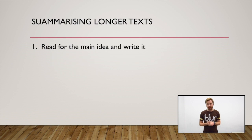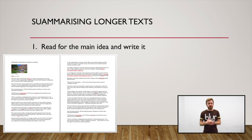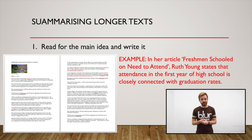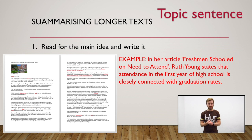First, read for the main idea and write it. The best thing to do is to read the text, then, without looking at it, think and write in your own words what the main idea is in one sentence. You should also state the title and the author. For example, this is the first sentence of a summary paragraph and is the topic sentence.